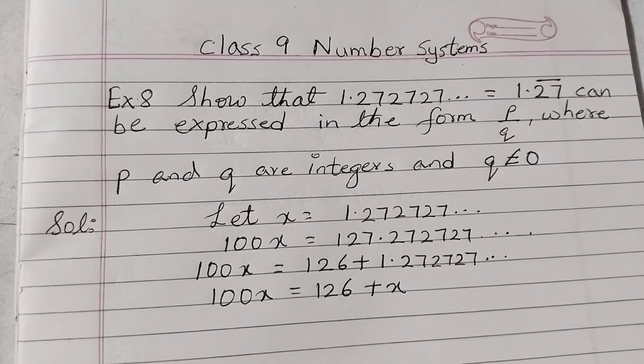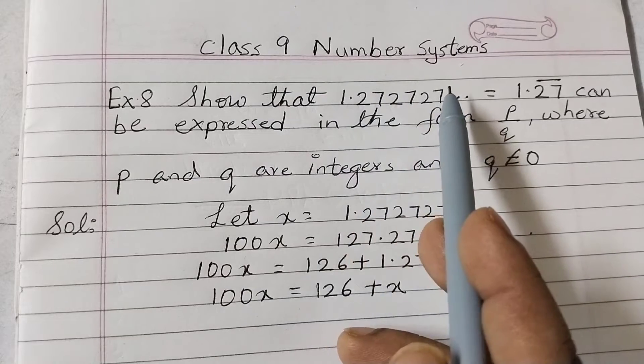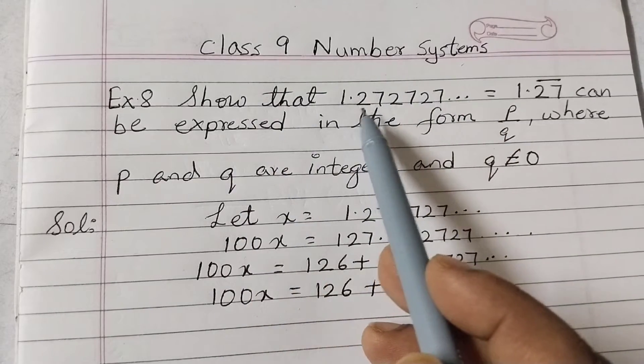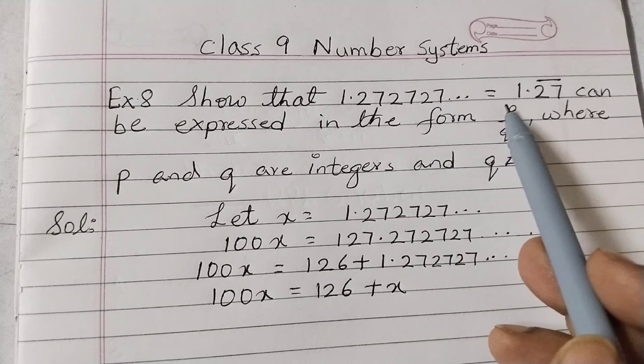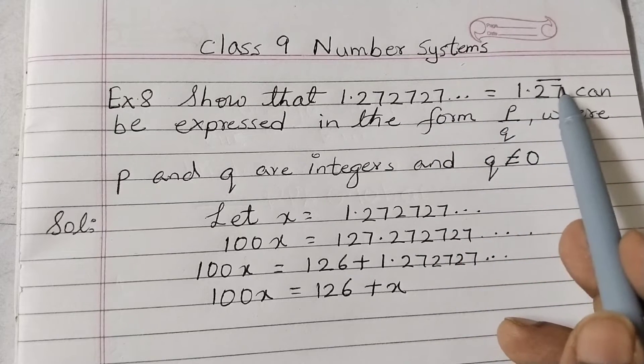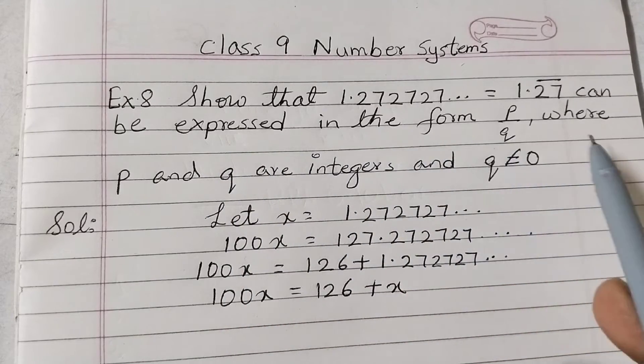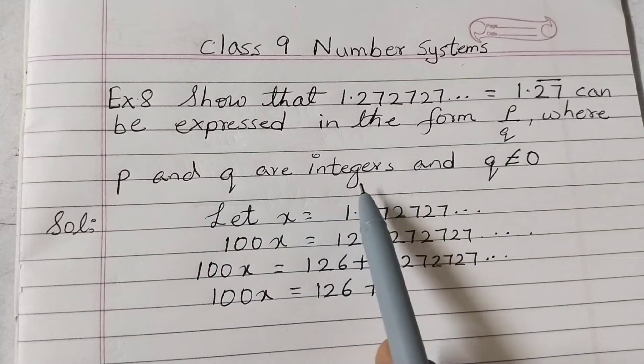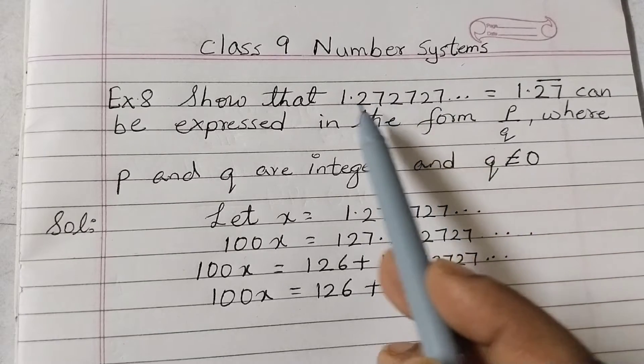Hello students, in this video we shall solve example number 8 of class 9 number systems. Show that 1.272727... equals 1.27̄ can be expressed in the form p/q, where p and q are integers and q is not equal to 0. So a decimal number is given to us.